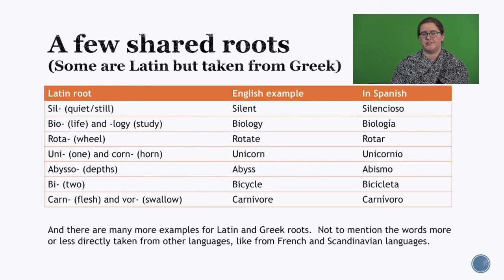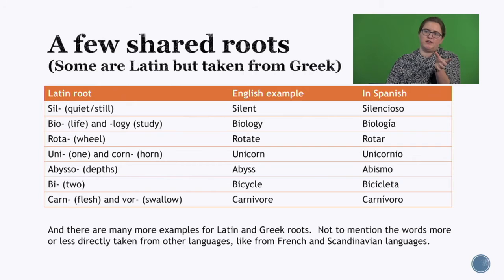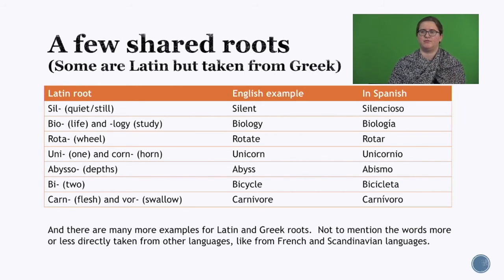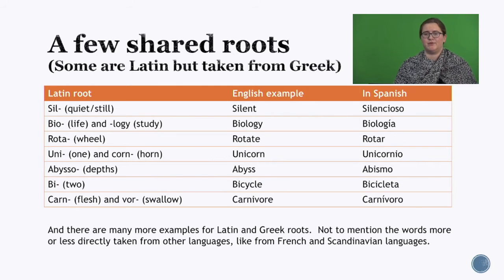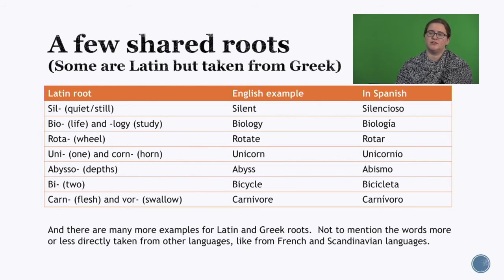'Rota' means wheel — so 'rotate' in English, because if you have a wheel and you turn it, you rotate it like a wheel. 'Rotar' in Spanish. And 'unicorn,' with 'uni' meaning one and 'corn' meaning horn — so unicorn means one horn. In Spanish, 'unicornio.'